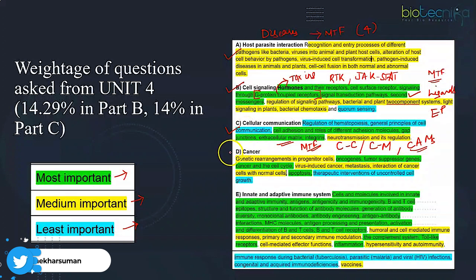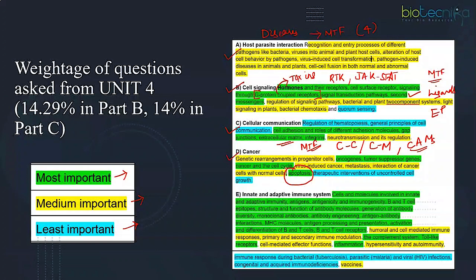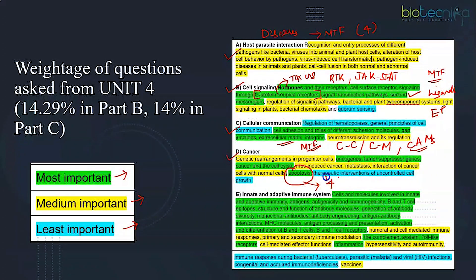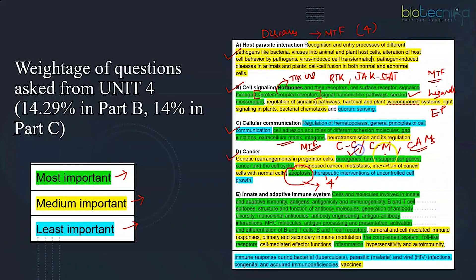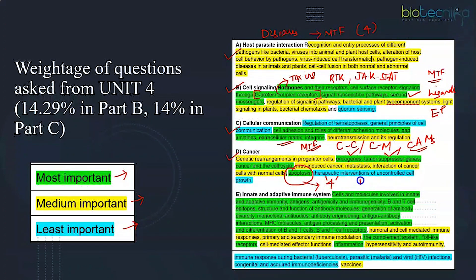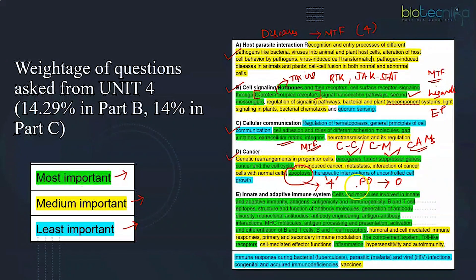Then the fourth subunit is cancer. As you can see, one small topic is apoptosis. Sometimes they ask, sometimes they skip. But even if they are asking, you can expect a question that will be carrying four marks. Important topics include the differences between oncogenes and tumor suppressor genes along with their examples, then how a proto-oncogene is getting converted into an oncogene, again with examples.